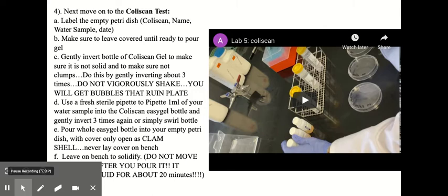And then you would gently invert the bottle of the coliscan gel to make sure it's not solid and make sure there's no clumps. So you do that by gently inverting it about three times, not vigorously shaking it because that would give you bubbles that would ruin the plate.